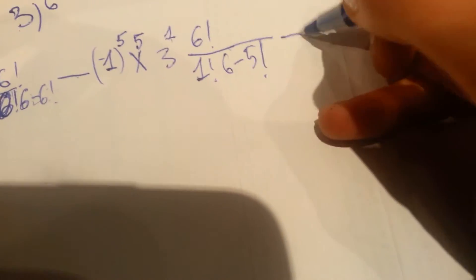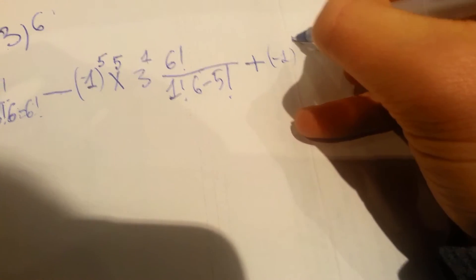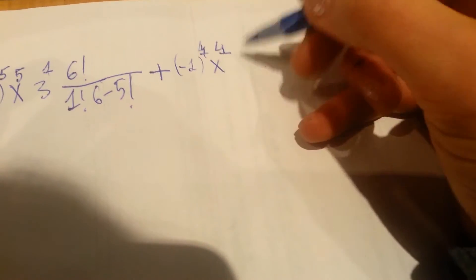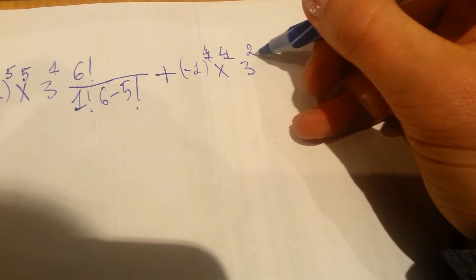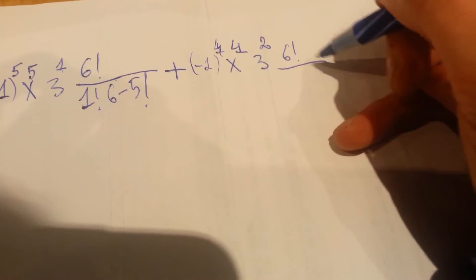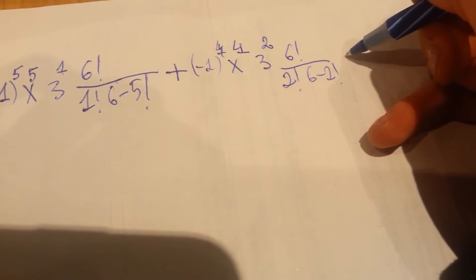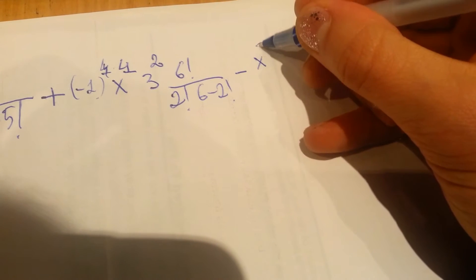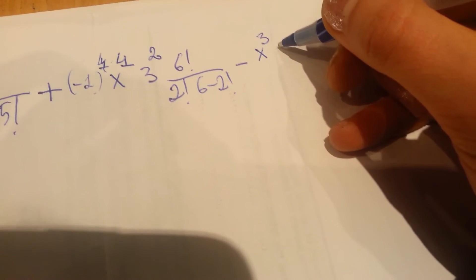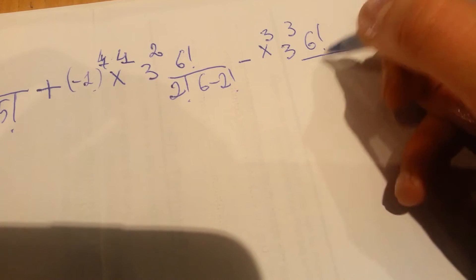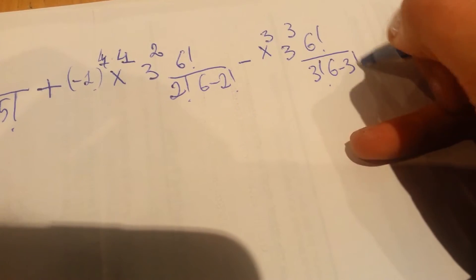Next, we're going to be plus because minus 1 to the 4th degree is plus. And we're going to have 3 to the 2nd degree, and then 6 factorial over 2 and 6 minus 2 factorial. Then we're going to have minus, because of the 3rd degree. We write x to the 3rd degree and 3 to the 3rd degree, and 6 factorial over 3 and 6 minus 3 factorial.